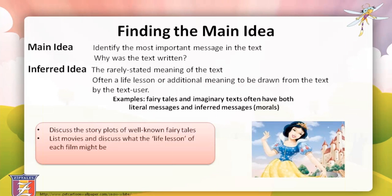Another activity is to make a list of popular movies or books and group students according to who has seen or read each one. The groups could discuss what they think the main idea of the story is by asking, what life lesson can I learn from this story? For example, Toy Story — success is achieved through teamwork — or Shrek — it's what's on the inside that counts. Groups could share their findings with the class. Students could also browse the blurbs of a variety of books and see if they can predict what the main idea of the story might be, then after reading, determine if their prediction was accurate.